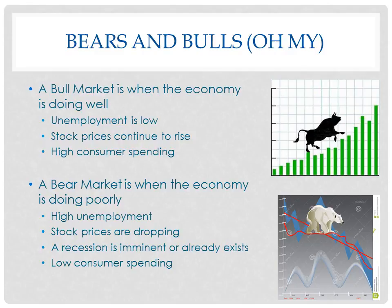You've also likely heard the words bear and bull when referring to a market. A bull market is when the economy is doing really well — unemployment is low, stock prices are rising, and there's high consumer spending, because spending keeps the economy churning. A bear market is when the economy is doing poorly — high unemployment, stock prices are dropping, a recession is imminent or already exists, and consumer spending is very low. Right now we've been in a bull market, with a few blips because of economic problems in China, but in general we've seen a really strong stock market the last few years.